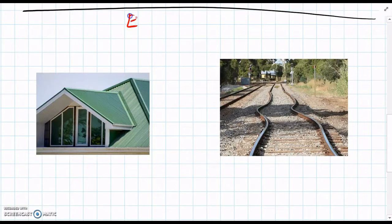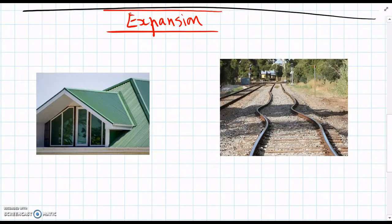The first one is expansion. This is the other main one, really. So when you go into a building that has a metal roof, next time you're in one, have a listen when the sun comes out from behind a cloud and it starts to heat up the roof.